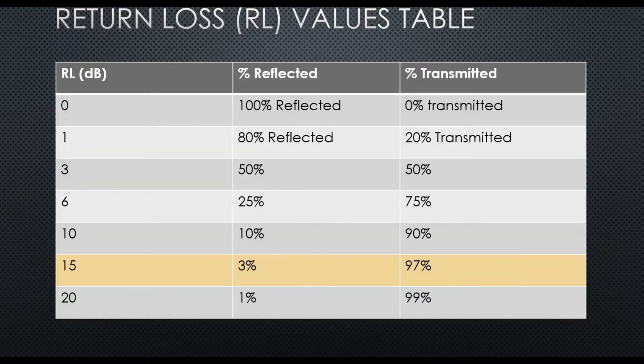So here's a return loss values table, just to give you an idea about the return loss value and what it means actually. So if you have a 0 dB return loss, that basically means 100% of your signal is being reflected. And if you have 3 dB, that's 50% off. So 15 dB would mean you're okay to deal with 3% being reflected and 97% being transmitted or emitted by the antenna.